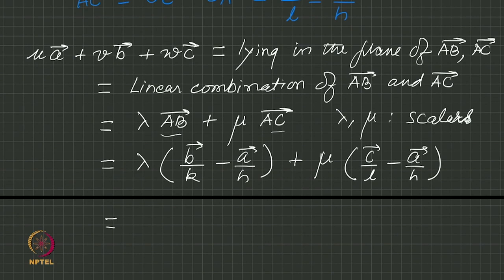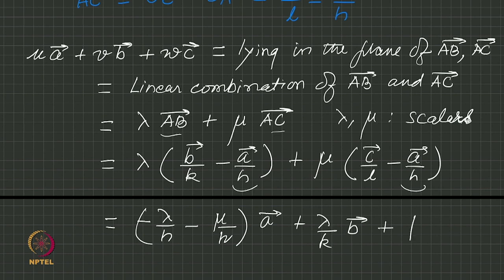We can now collect the terms in terms of a, b, and c. We have (-lambda/h - mu/h)a, then for b we have lambda/k b, and for c we have mu/l c. But a, b, and c are also linearly independent vectors because those were the basis vectors for our original coordinate system.